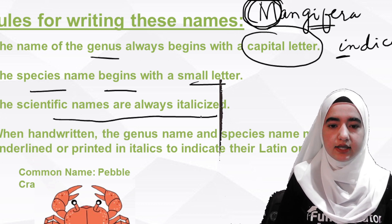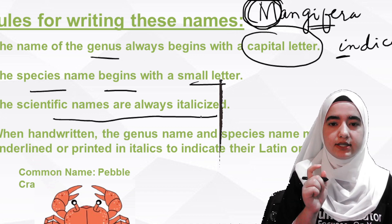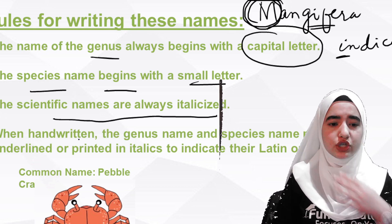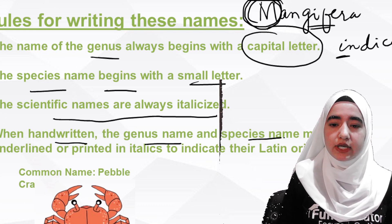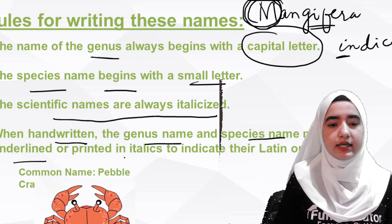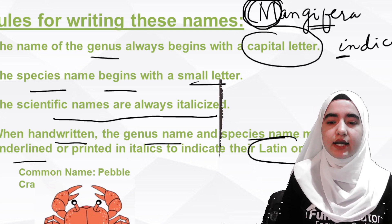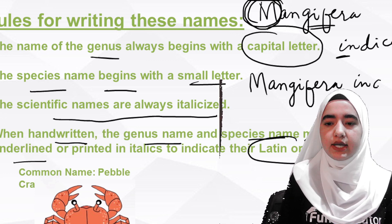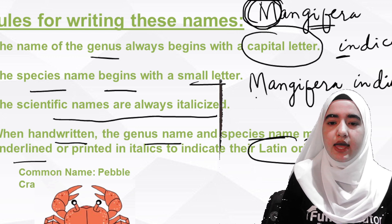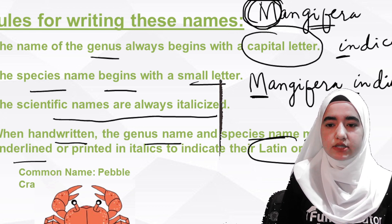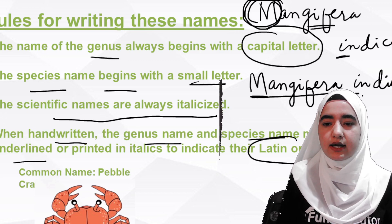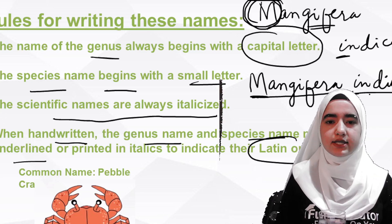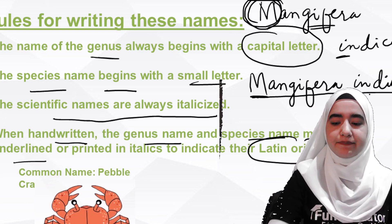Scientific names are always italicized. When writing on a computer, laptop, or printing, the names are written in italics. When handwritten, both the genus and species names must be underlined separately. For example, Mangifera indica — the genus and species are underlined separately when handwritten, or italicized when printed.